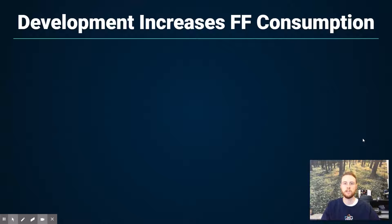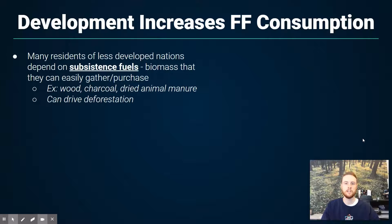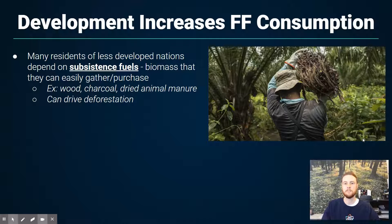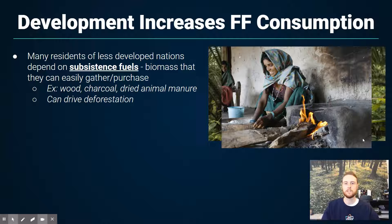Another key trend is how increasing development leads to increased fossil fuel demand. When countries are underdeveloped, they rely heavily on subsistence fuels — things like wood, manure (dried animal waste), charcoal, and other biomass that can be easily gathered and burned at home for heat or cooking. These are heavily utilized in the developing world because they're cheaper and readily available — people can harvest them without paying an electric utility or purchasing on a market.